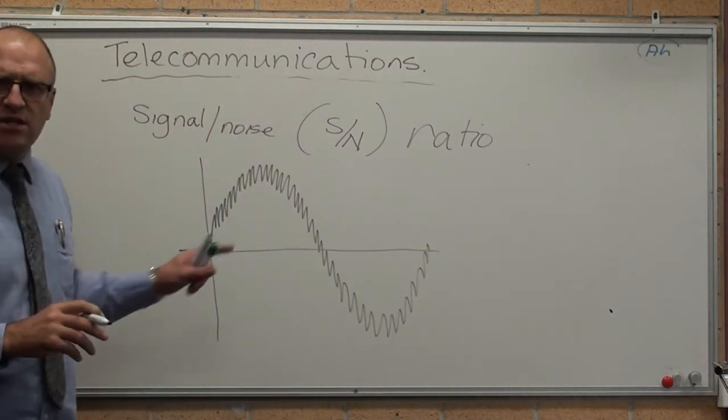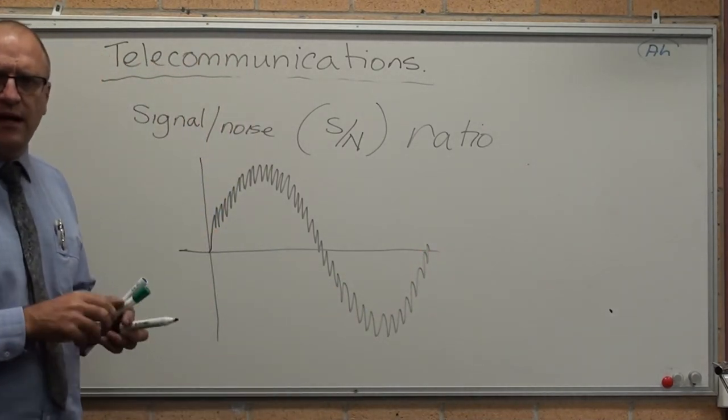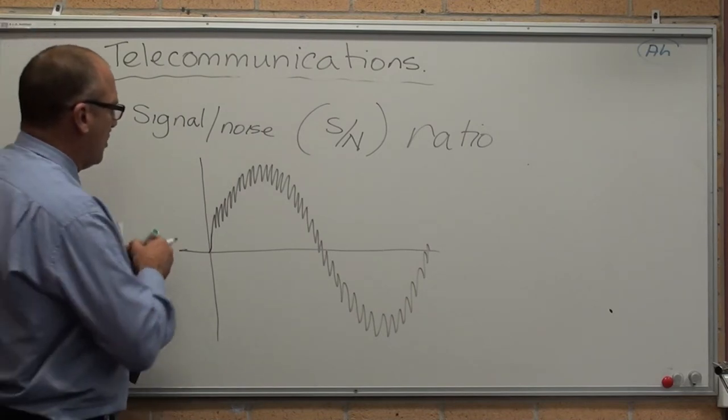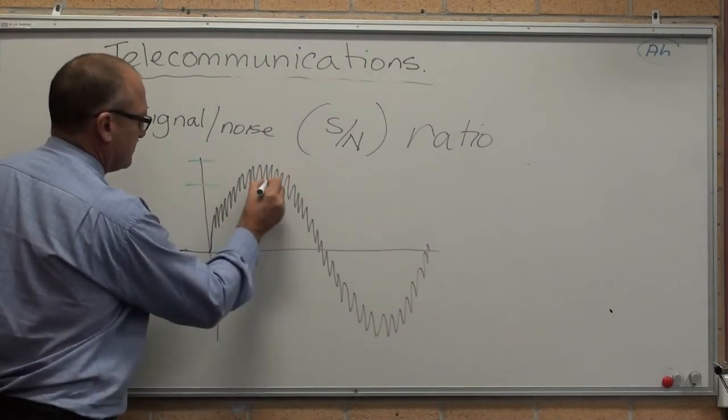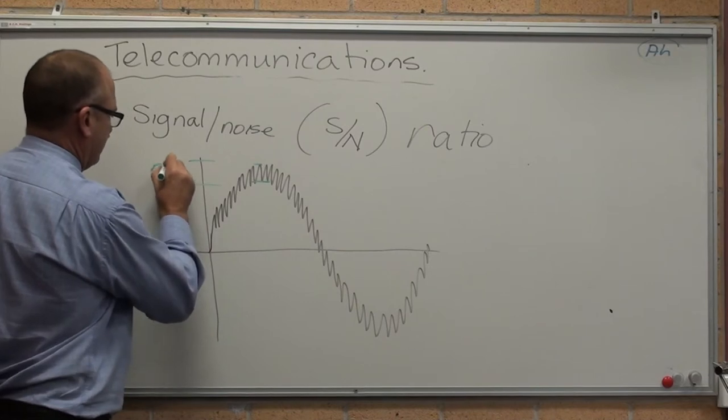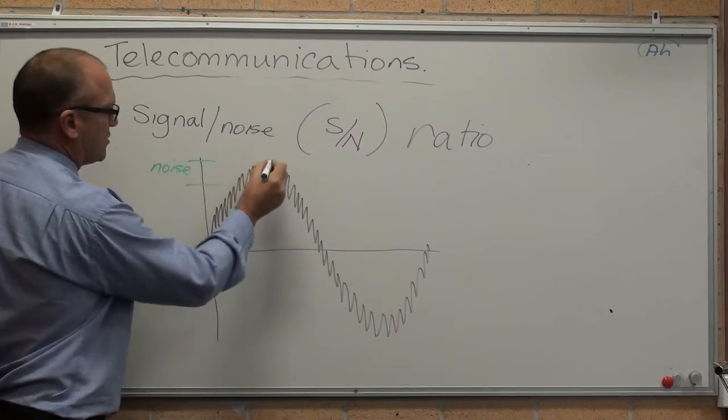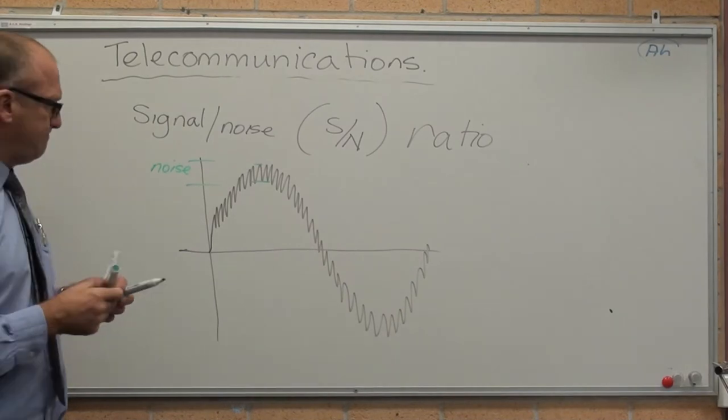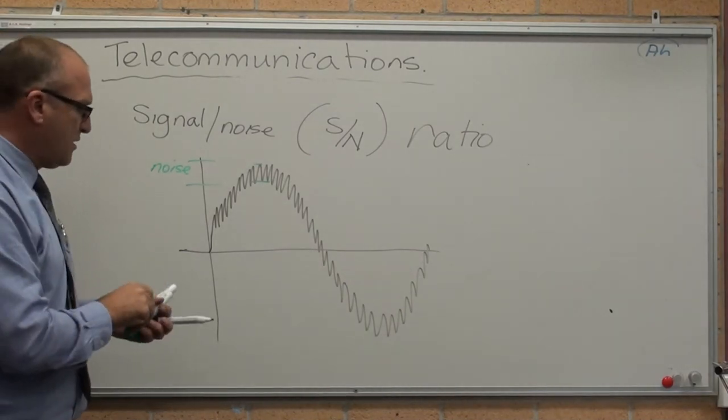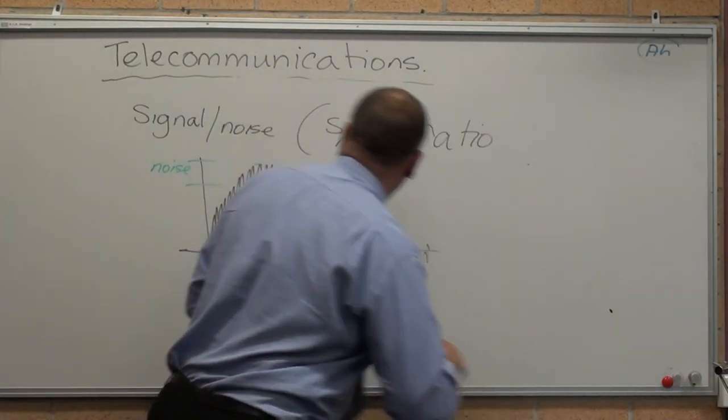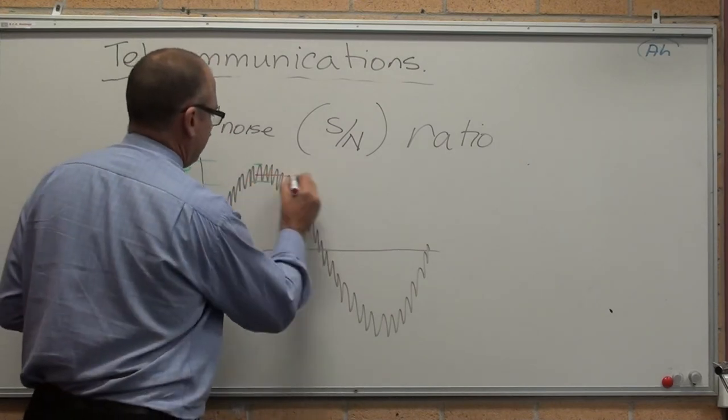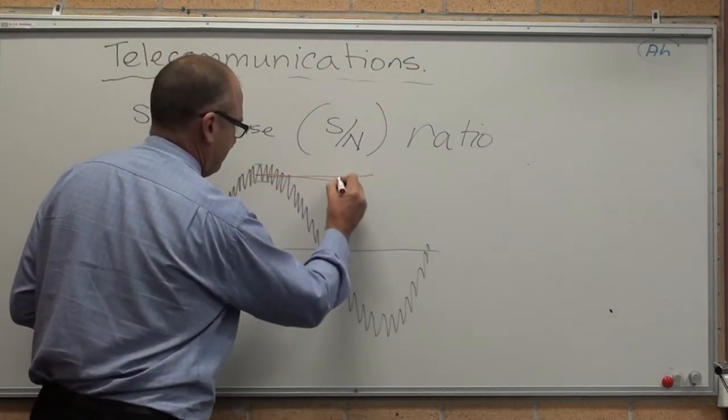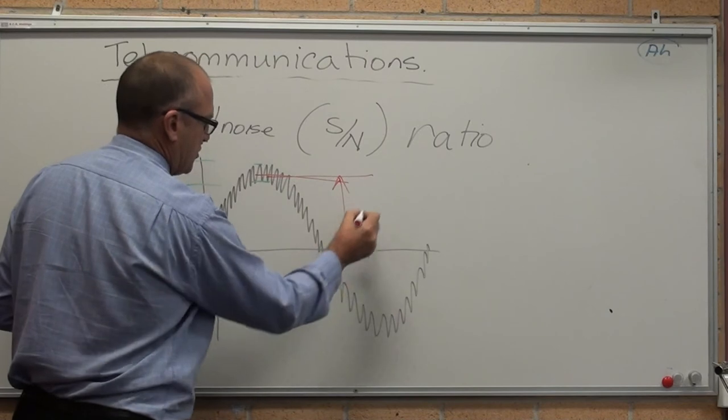Where it's clearly a sine wave, but it has fluctuations. The noise is the width of the fluctuations. The signal strength is the average strength.